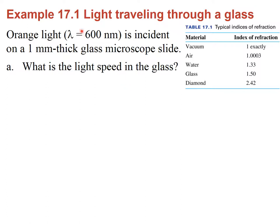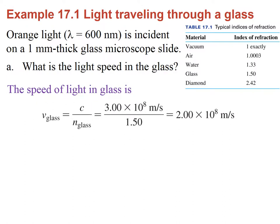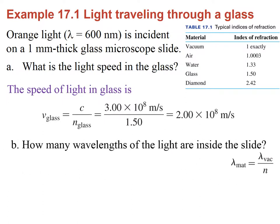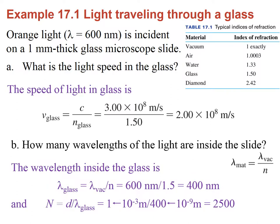Another example: light of 600 nanometers enters a microscope slide that is 1 millimeter thick. What is the speed of light in the glass? For glass, n = 1.5, so the speed is c divided by 1.5, which gives 2×10⁸ m/s. The next question is how many wavelengths fit inside the slide — this is simply the thickness divided by the wavelength in the glass, which gives 2,500 complete wavelengths fitting inside 1 millimeter of glass.